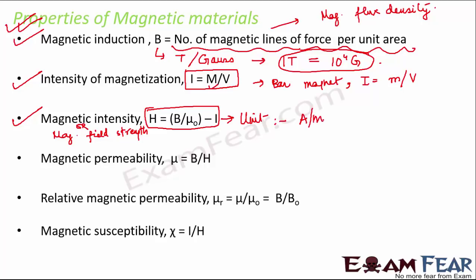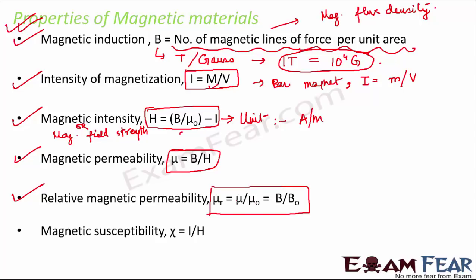Magnetic permeability, denoted by mu, is a measure of conduction of magnetic lines of force through a substance. It is measured as the ratio of B and H, where B is magnetic flux density and H is magnetic intensity. Relative magnetic permeability, mu R, is the ratio of mu by mu naught and is also written as B by B naught. Since it is a ratio of two quantities with similar units, mu R is unitless.